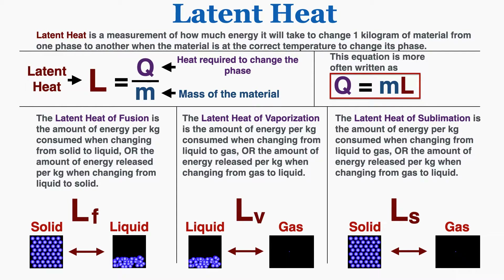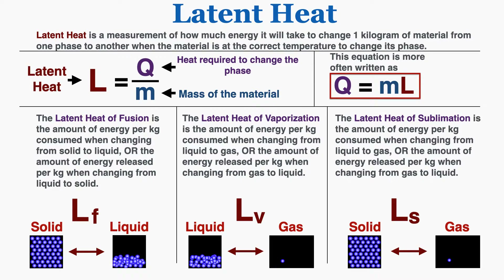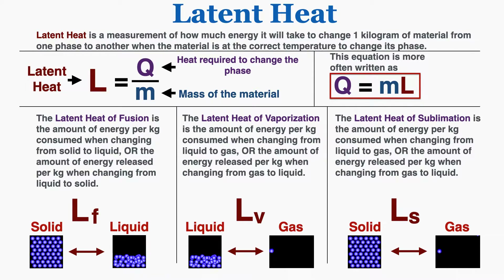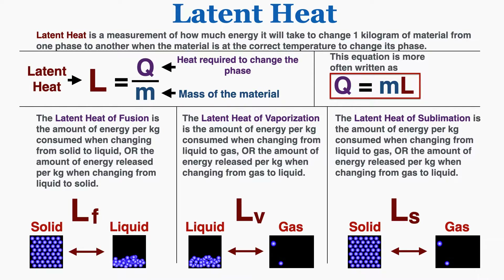The latent heat of fusion is the amount of energy per kilogram consumed when changing from solid to liquid, or the amount of energy released per kilogram when changing from liquid to solid. The latent heat of vaporization tells you about going from liquid to gas or gas to liquid, and the latent heat of sublimation tells you about going from solid to gas or gas back to solid.